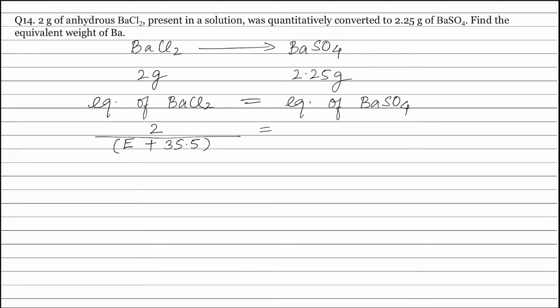Similarly, equivalence of barium sulfate equals weight of barium sulfate divided by equivalent weight of barium sulfate, which equals E plus 48 (equivalent weight of the sulfate group).